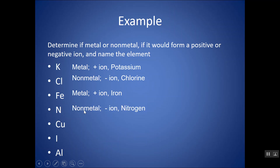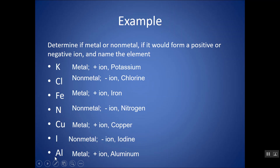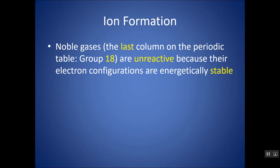N is a non-metal because it's on the right of the staircase — it would form a negative ion — we call that nitrogen. Cu is copper, it's a metal, and therefore it forms a positive charge. I is iodine, to the right of the staircase — a non-metal that would form a negative ion. Aluminum is a metal to the left of the staircase, so it would form a positive ion.